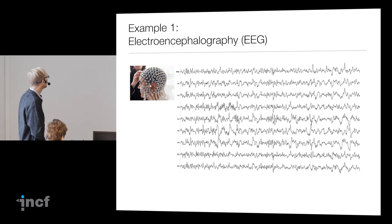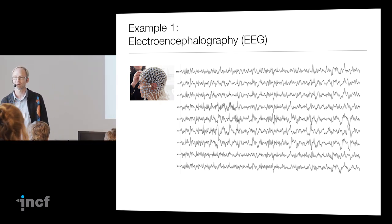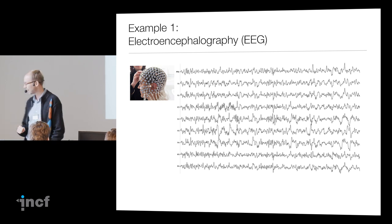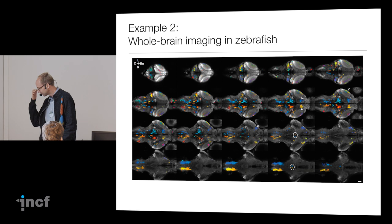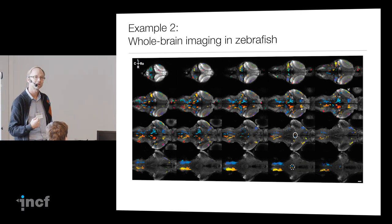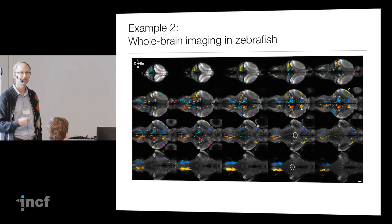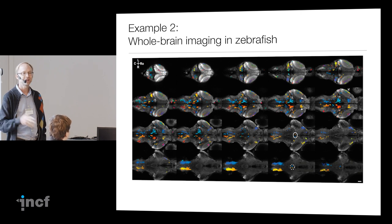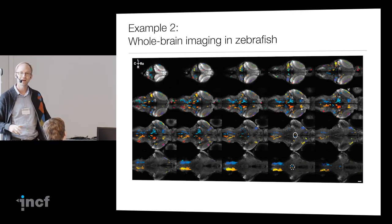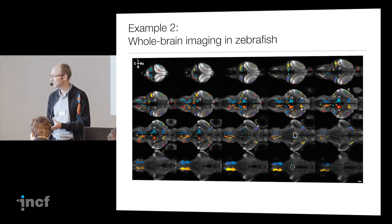I have some examples. One example could be you record EEG from a human over many hours, you have many different channels, and then afterwards you try to understand what was happening. Another example — particularly terrifying — is calcium imaging in an animal such as the zebrafish. The zebrafish is transparent, so people can basically now image the whole brain: something between 100,000 or a million neurons, and you can image that over eight hours. It comes on a hard disk in the order of terabytes.